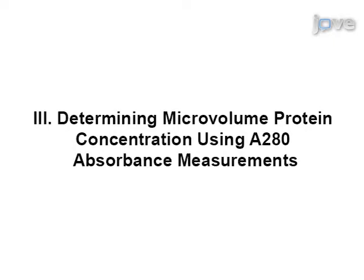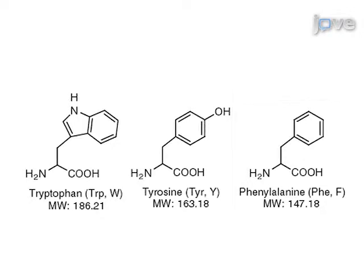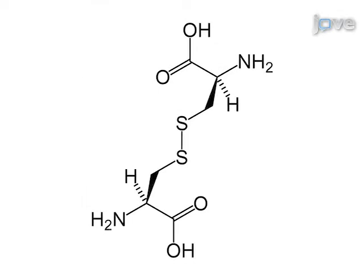The protein A280 method is applicable to purified proteins that contain tryptophan, tyrosine, and phenylalanine residues, or cysteine-cysteine disulfide bonds, and exhibit absorbance at 280 nanometers.